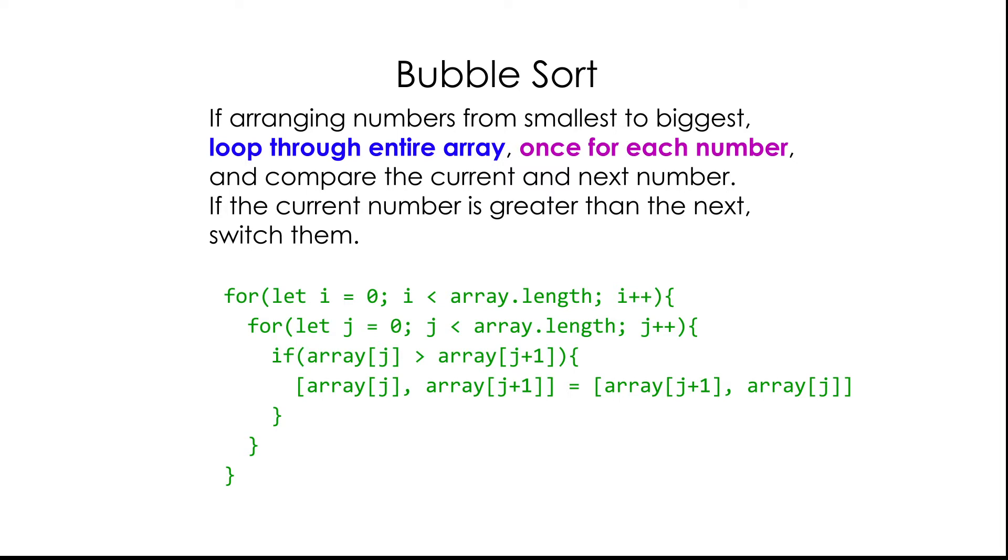In the array, it's gonna do this inner block of code, which is basically go through each number and check if the current number is greater than the next number. If it is, they'll switch places so that the smaller numbers come before the bigger numbers.